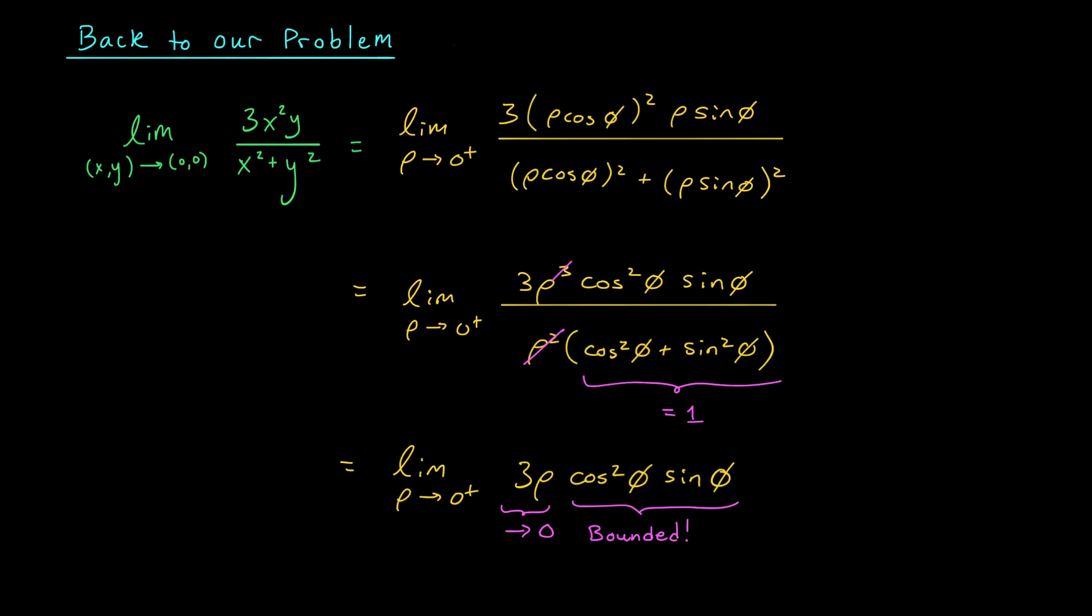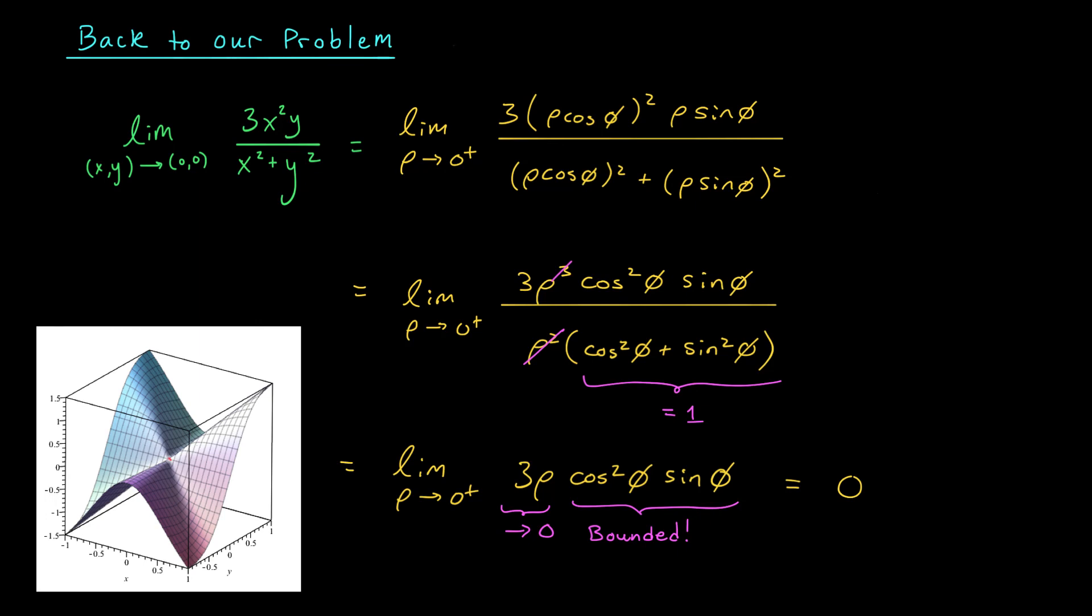The exciting thing is, if you take a bounded quantity and you multiply it by something that tends to 0, well, the whole limit is going to be pulled down to 0 with it. So this limit is 0. Pretty cool, huh? You can actually see this behavior in the graph of our function. The graph looks a little funky around the origin, but still, no matter what crazy path we take to get there, we can see that our function is always approaching a value of 0.